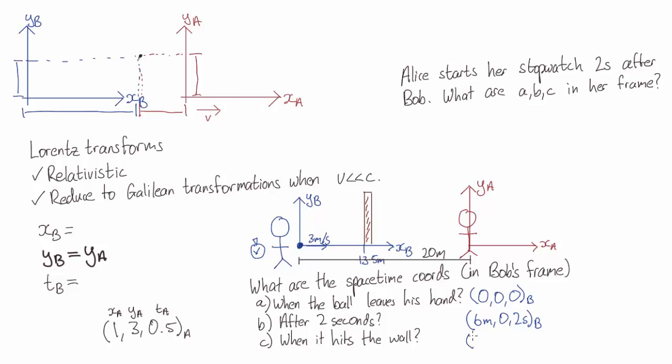When the ball hits the wall, its x position is 13 and a half meters. It's still along the y equals 0 axis, and it will hit the wall 13 and a half divided by 3, which is 4.5 seconds after Bob's started time.